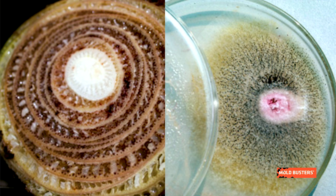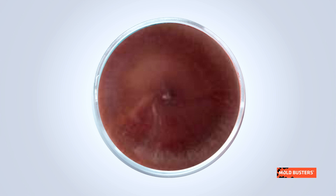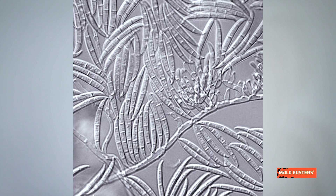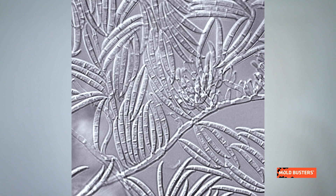Their colonies come in many different shapes and sizes — flat or cottony, white, cinnamon, red, pink, and purple. One of the most important species in North America is Fusarium graminearum.